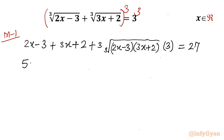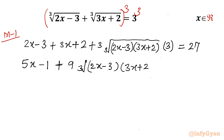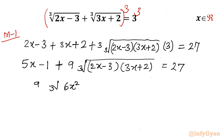Once simplified, it becomes: (5x-1) + 9 times ∛[(2x-3)(3x+2)] = 27. I will take (5x-1) to the right, so it becomes 9 times ∛(6x²-5x-6) = 27 + 1 - 5x, which gives 28 - 5x on the right-hand side.